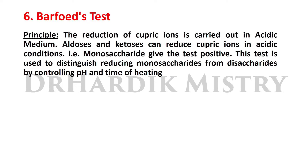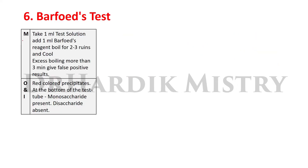Barfoed Test. Principle: The reduction of cupric ions is carried out in acidic medium. Aldoses and ketoses can reduce cupric ions in acidic conditions; for example, monosaccharides give this test positive. This test is used to distinguish reducing monosaccharides from disaccharides by controlling pH and time of heating. That is the principle of Barfoed test.